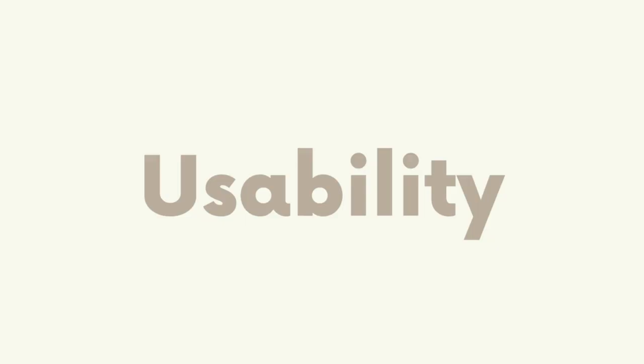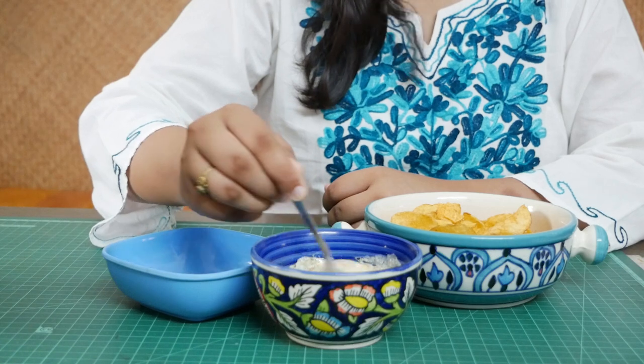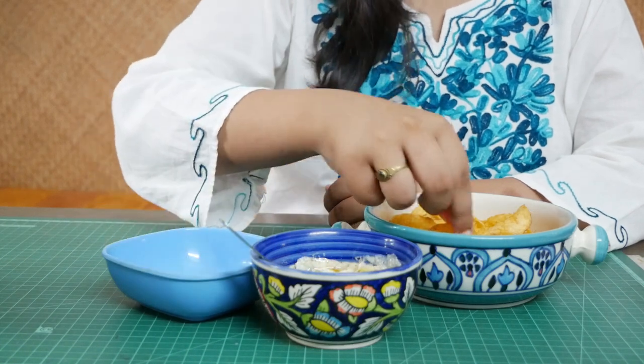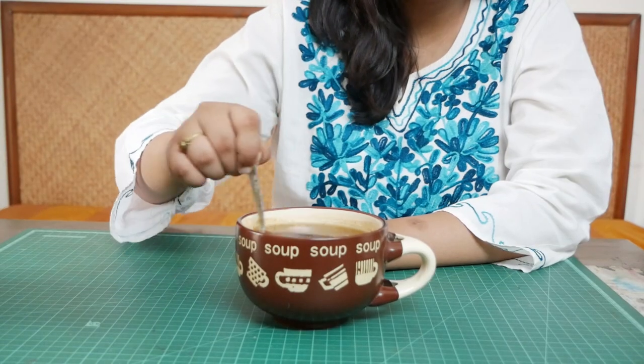This is a demitasse spoon, also known as Chota Chammach. We all have that favorite spoon that we just cannot seem to have any meal without. Well, this is not that. In fact, far from it. Demitasse spoon is used for working with small proportions like mixing sugar in tea or coffee. Spoons in general are used for scooping and transferring food from one place to another, and some special person decided to give that same purpose to this piece of metal that I am holding right now.